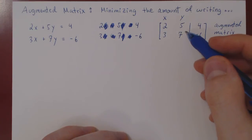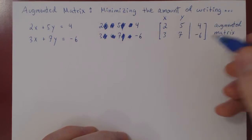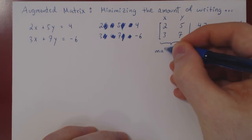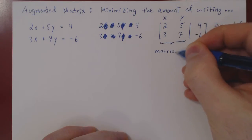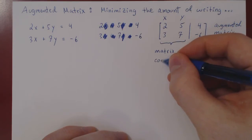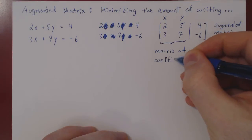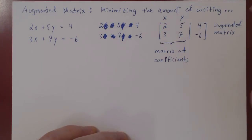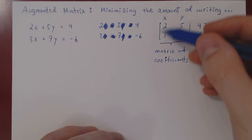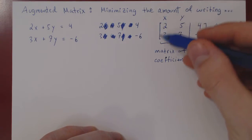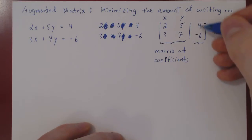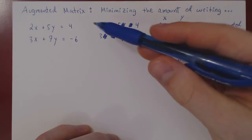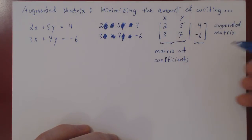The augmented matrix consists of two parts. The first block consists of the coefficients — we call this the matrix of coefficients. All a matrix is, is a rectangular array of numbers. The second part is a single column containing the constant terms — we call this the column of constants.